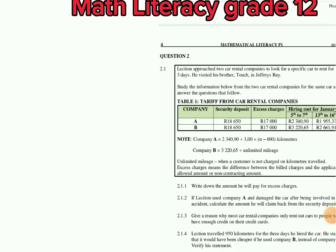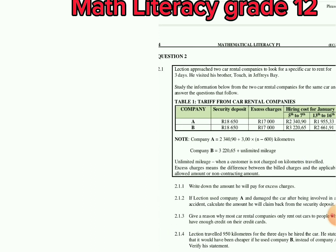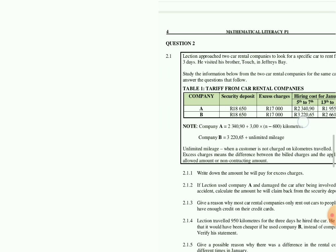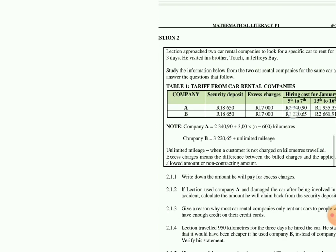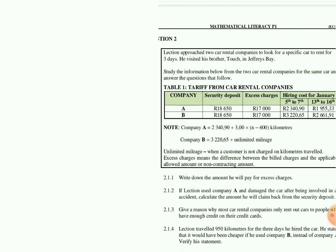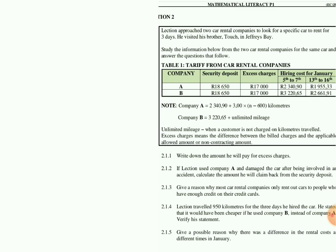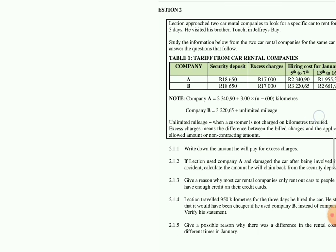Hello guys, welcome to Top Wisdom Education. Today's topic is a Grade 12 topic which is metallic tariffs. We're going to be talking about tariffs today. I'm going to make the video as short as possible but ensure you understand, because the aim is for you to understand how to calculate tariffs. It's question two — Lexin approached two car rental companies to look for a specific car to rent for three days. He visited his brother in Jeffrey's Bay. Study the information below from the two car rental companies for the same car and answer the questions that follow. As you can see, table one tells us about the rental companies.